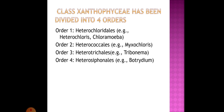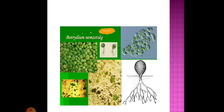Xanthophyceae class is divided into four orders: Heterochloridales (examples: Heterochloris, Chloramoeba), Heterococcales (example: Myxochloris), Heterotrichales (example: Tribonema), and Heterosiphonales (example: Botrydium). Examples of Xanthophyceae include Botrydium and Mischococcus. The structure of Botrydium, showing how it appears on soil and its detailed structure, is shown in the picture.